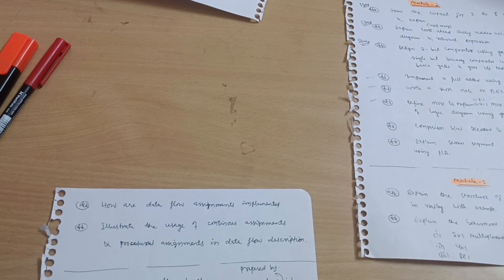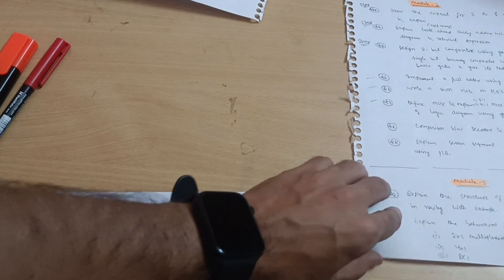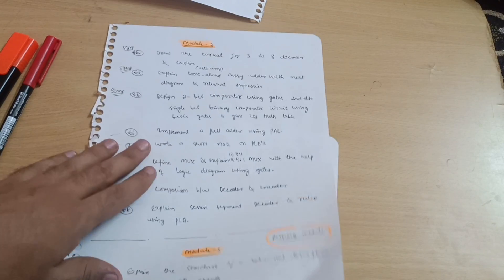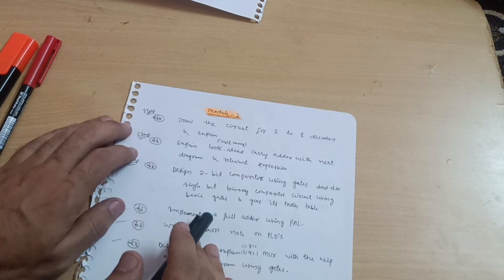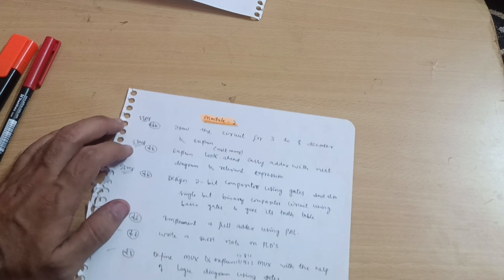These are the questions from module four which you should cover. These are the three passing modules. Now let me discuss module second. Module second: you have to cover draw the circuit for 3-to-8 decoder and explain. Most important one.